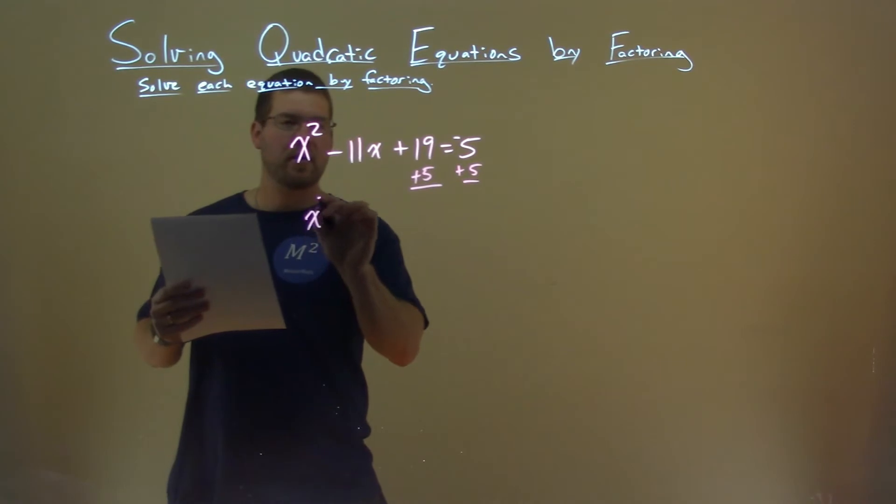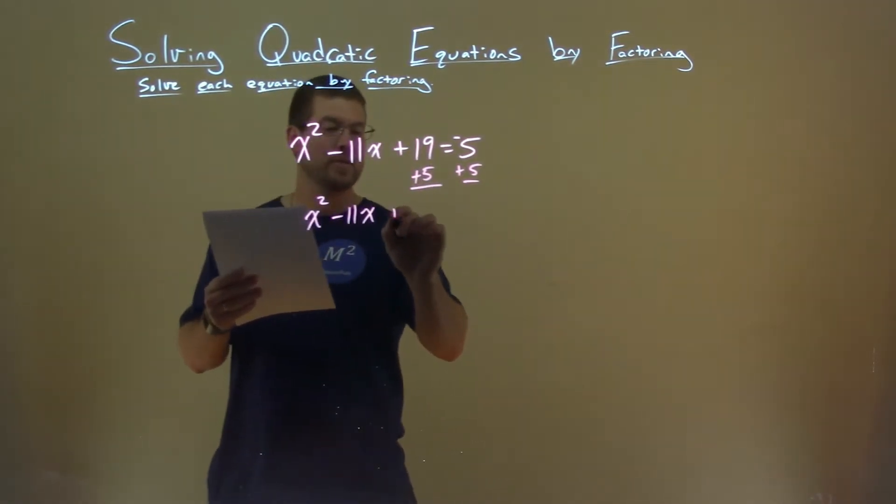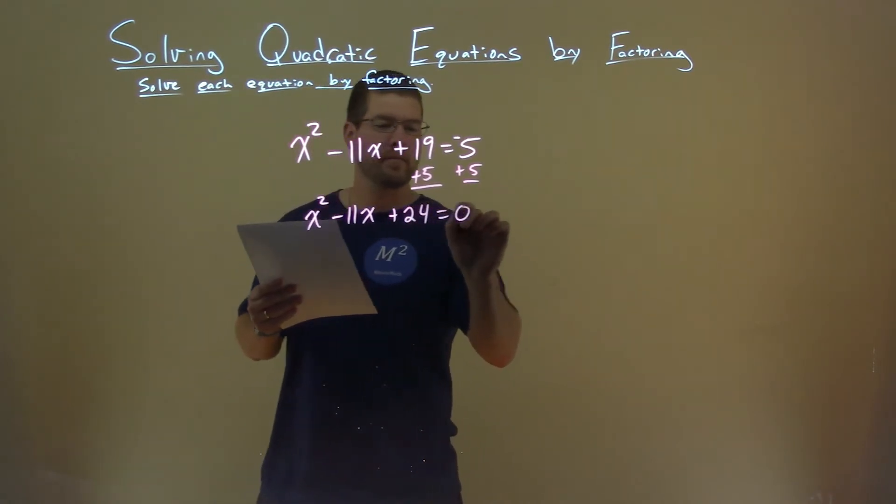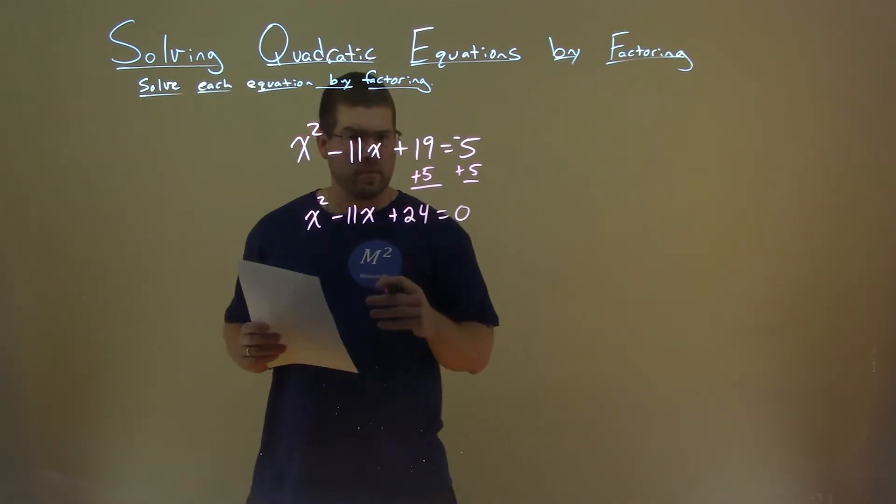This brings down our x squared minus 11x and then 19 plus 5 gives me my 24. And so now we have to factor. So hopefully you have some practice with this.